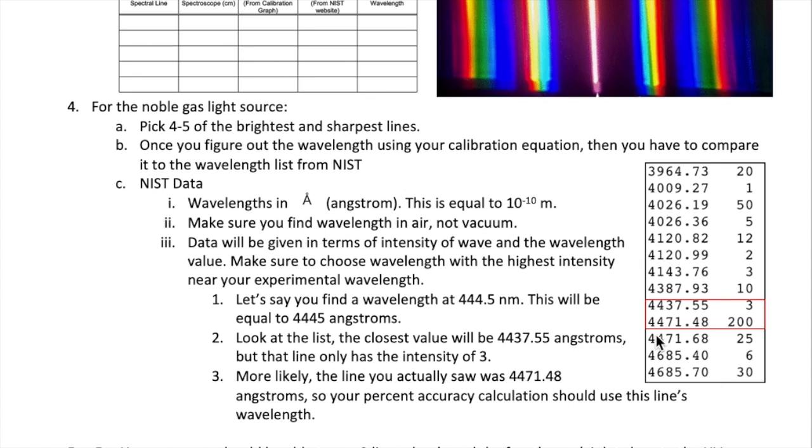I have cropped this table so it only shows the first two columns. The first column is wavelength in unit of angstroms, which is the letter A with a degree symbol on top of it, and that's equal to 10 to the minus 10 meter. The second column is the intensity or brightness of each of those lines. When you look at the data, make sure you scroll down to the part that says wavelength in air, not in vacuum.